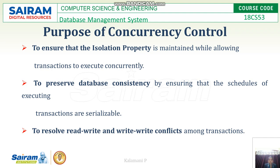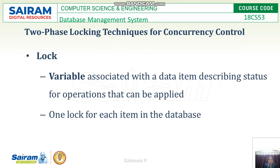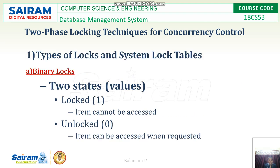In the ACID properties, concurrency control has to satisfy the isolation and consistency properties. Two-phase locking techniques are used for this. A lock is a variable associated with a data item describing its status — what operations can be applied to it. There is one lock for each item in the database.